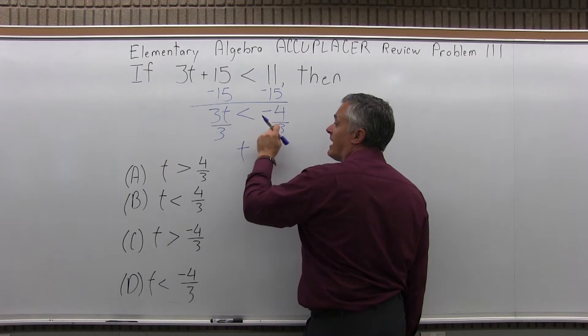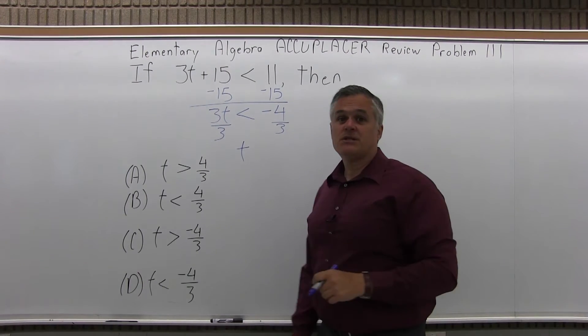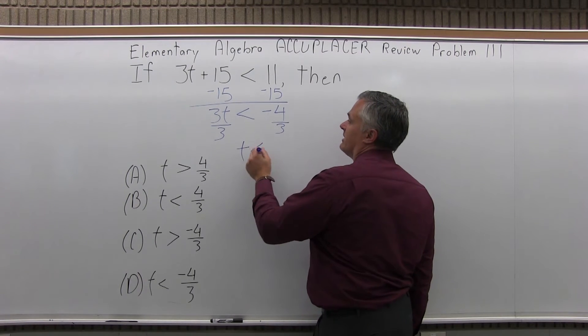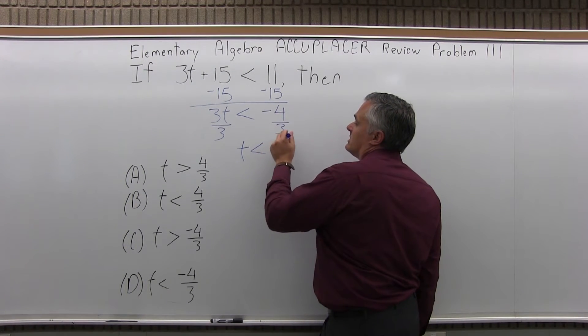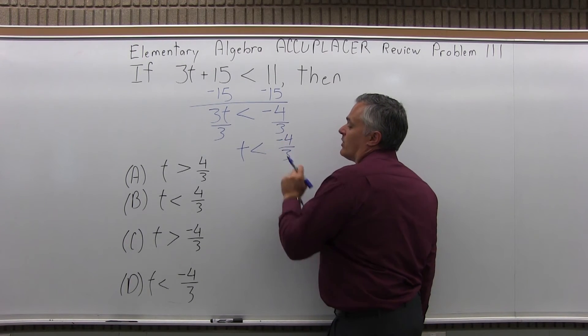Again, what I'm dividing by is positive. The answer's negative, that doesn't matter. I'm dividing by a positive 3, so the inequality symbol remains pointing the way it is originally. And then my answer is negative 4 thirds, so I have t is less than negative 4 thirds.